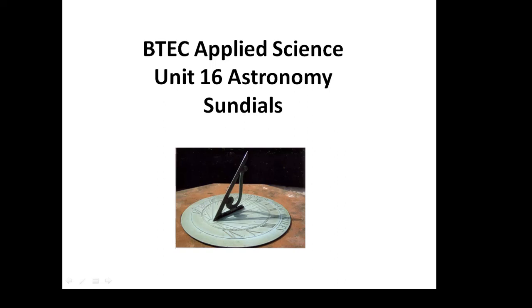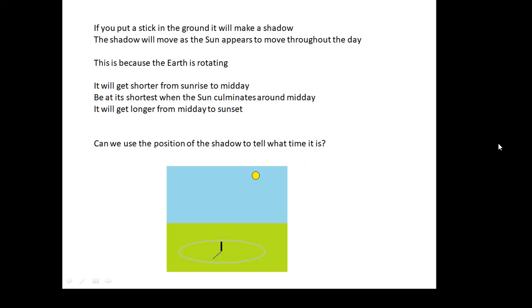Now, a sundial — if I put a vertical stick in the ground, it makes a shadow, and as the sun appears to move throughout the day the shadow will move. The sun appears to move throughout the day; it doesn't really — it's because the earth is rotating. So as the earth rotates, the shadow will move. We say the sun rises in the east, and in the morning the sun gets higher in the sky and the shadow gets shorter and shorter.